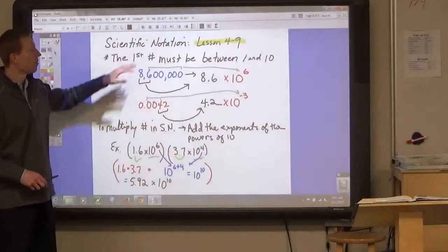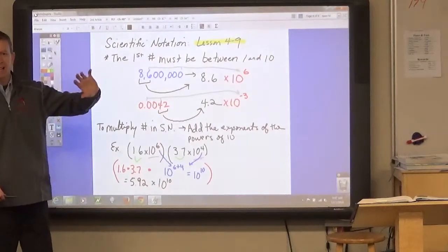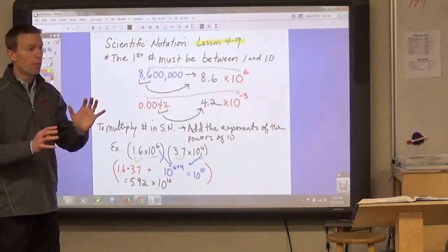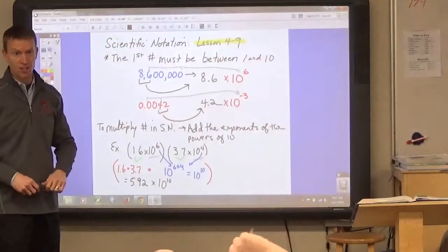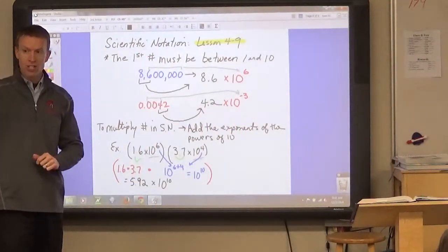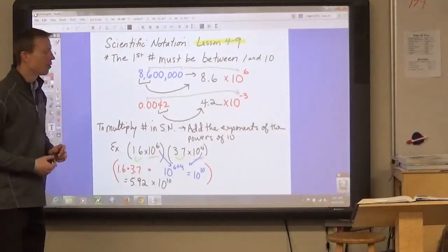This lesson is about scientific notation. It's a way that scientists use to write numbers that are either really big or really small. Rather than writing out all the zeros, they write it as a power of 10.